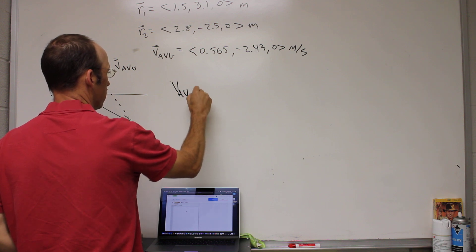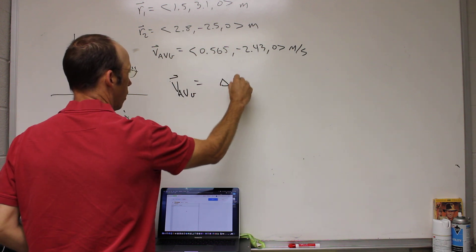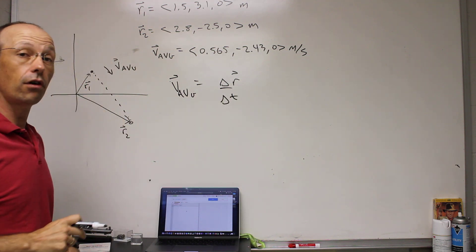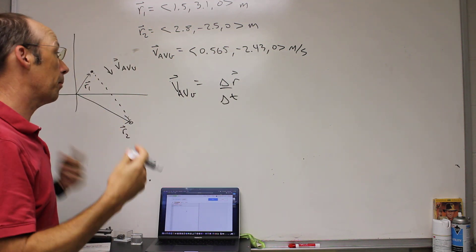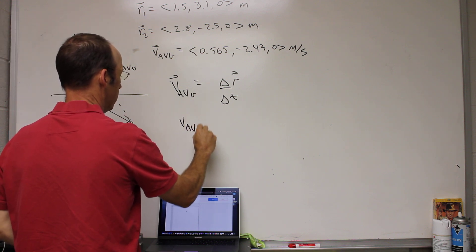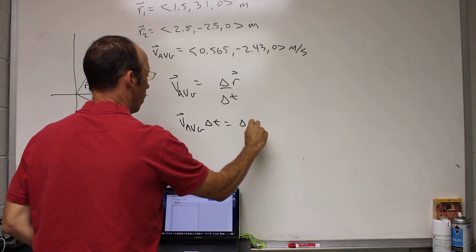And I know the average velocity vector is 0.565 in the x, negative 2.43 in the y, 0 meters per second. So the question is, how long did it take to get down there? Well, v average is delta r over delta t, that's the definition of average velocity. I can multiply both sides by t, delta t, I get v average delta t equals delta r.